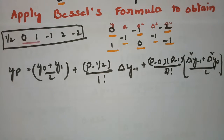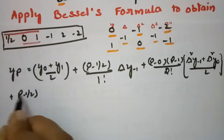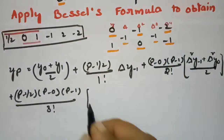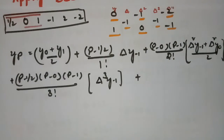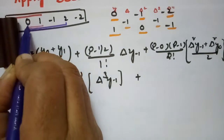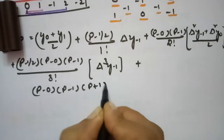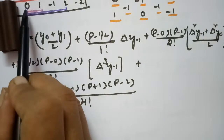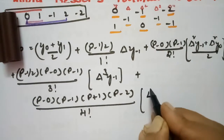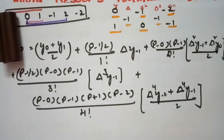Continuing, the next term uses the three values half, 0, 1: (P − 1/2)·P·(P−1) divided by 3 factorial times Δ³Y₋₁. Then, taking four values 0, 1, −1, 2: P(P−1)(P+1)(P−2) divided by 4 factorial times (Δ⁴Y₋₂ + Δ⁴Y₋₁) divided by 2, and so on.